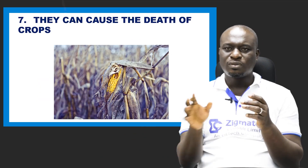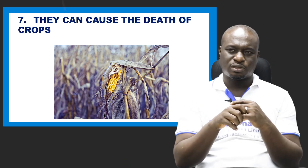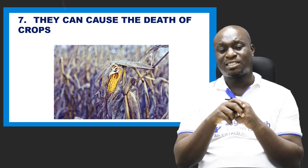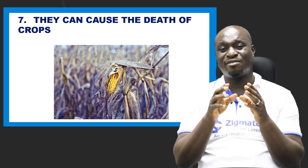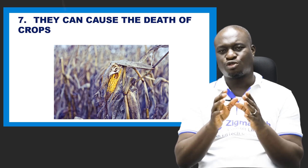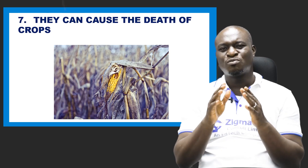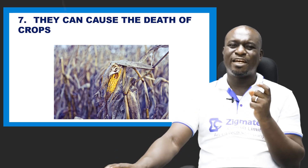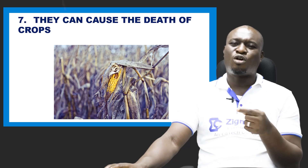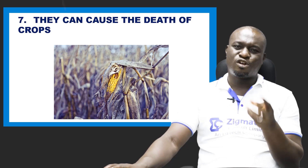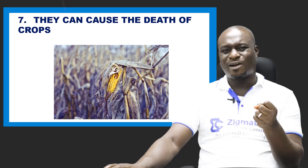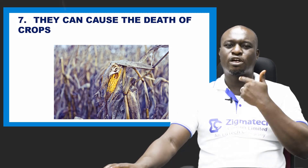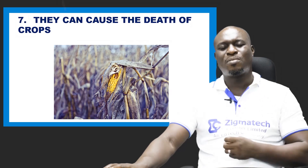Number seven: they cause the death of crops. The activities of pests in farmlands are so disastrous — they affect agriculture negatively. It is not just enough knowing the effects; how do we control these things? It's not just enough identifying the problem. We've identified that the problem is the pest and seen the effects of this pest. Now, how do we control and prevent this from happening?